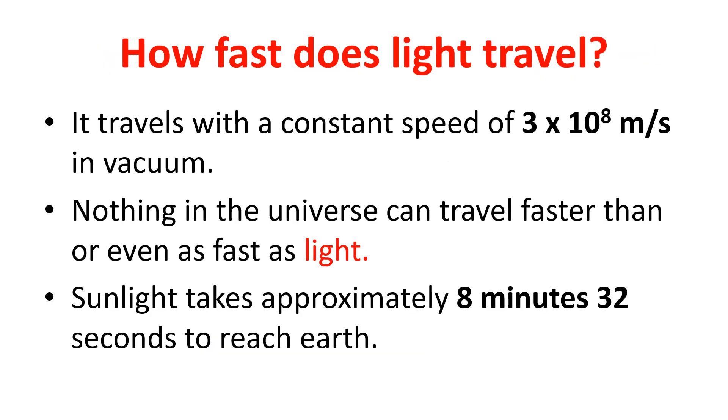How fast does light travel? It travels with a constant speed of 3 times 10 to the power 8 meters per second in vacuum. Nothing in the universe can travel faster than or even as fast as light. Sunlight takes approximately 8 minutes 32 seconds to reach earth.